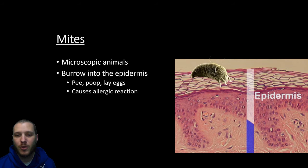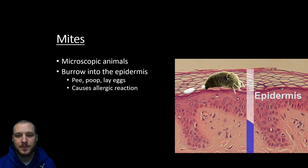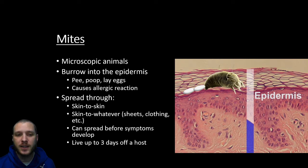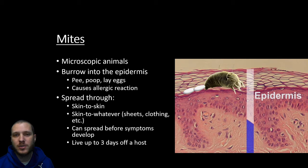The mite is going to find your epidermis, burrow on down, and eventually make itself a nice home where it's going to lay its eggs. These mites are going to be easily spread with skin-to-skin contact or even skin-to-clothing or skin-to-sheets. Anywhere where the mite is and it comes in contact with your skin, you can be at risk for infection.